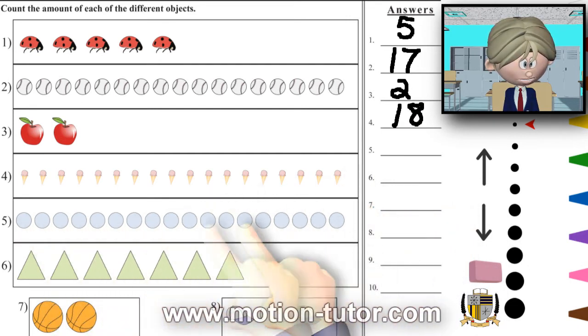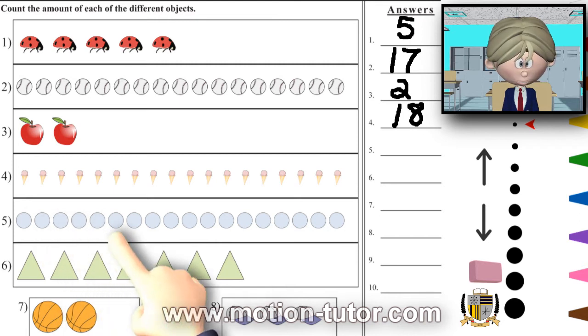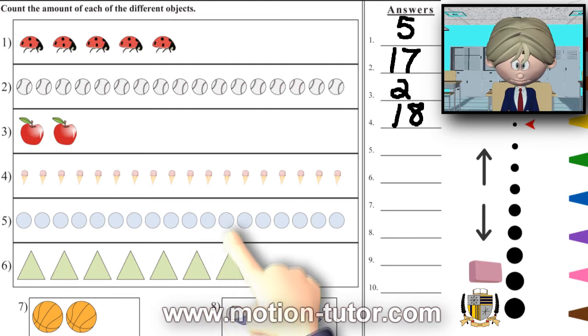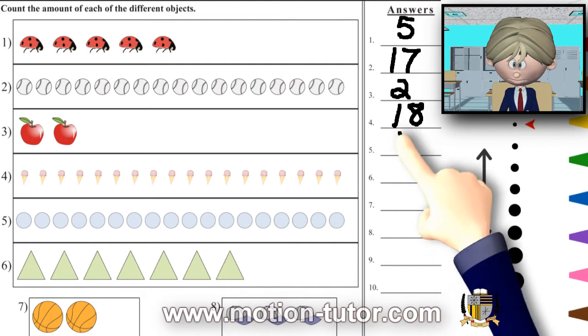What about these circles? One, two, three, four, five, six, seven, eight, nine, ten, eleven, twelve, thirteen, fourteen, fifteen, sixteen, seventeen, eighteen. So this is also 18.